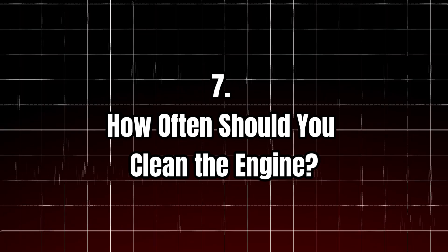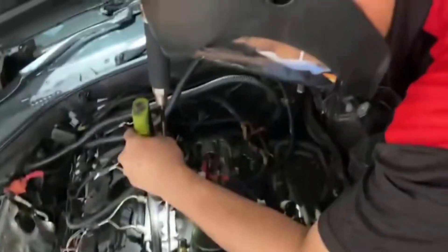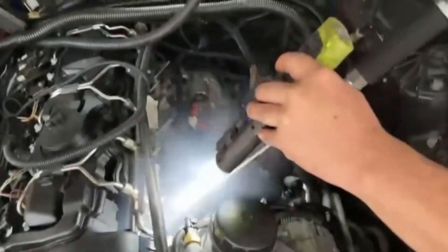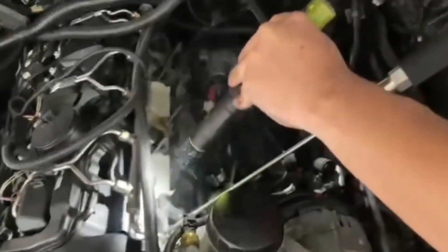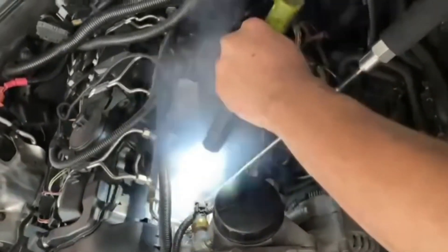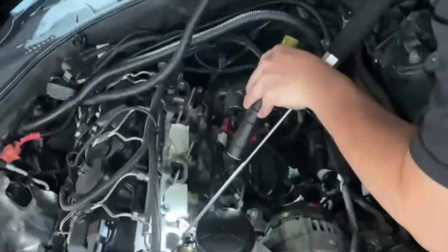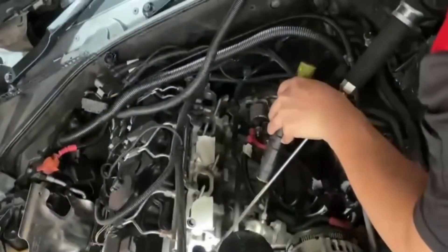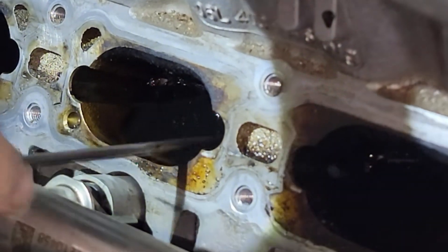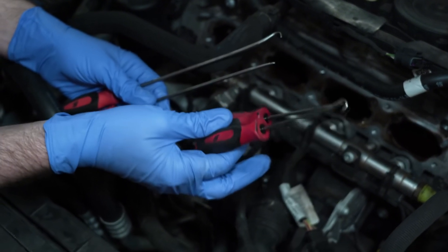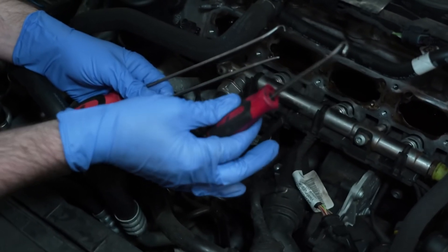You might be wondering: how often should you be cleaning the engine or checking for carbon buildup? Generally, it's a good idea to clean the intake valves and check for carbon buildup every 30,000 to 60,000 miles, depending on how often you drive and the type of fuel you use. If you drive mostly short distances, you might want to check it more often. Remember, prevention is key — regular maintenance and using fuel additives can help reduce the need for extensive cleaning.